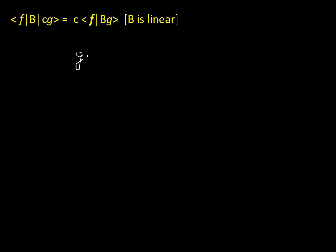Suppose you have a function g — a wave function — and it can be considered as a vector in a vector space. The function as a vector turns out to be a ket vector; you call it |g⟩ or ket g. Similarly, if you think of a function f and take its complex conjugate, in bracket notation it is the bra ⟨f|. So if something is in the bra position, when it comes out it is the complex conjugate of the function.